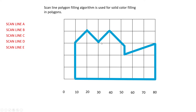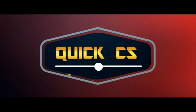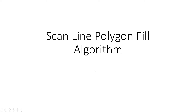We have this polygon over here in blue color. Let's pass the first scanline through this — we have scanline A and four intersection points: a, b, c, and d. Welcome to another computer graphics tutorial. Today we'll be looking at the scanline polygon fill algorithm.